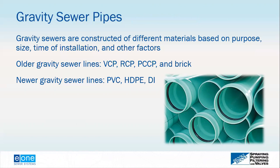Gravity sewer pipes and low pressure sewer pipes are constructed of similar materials, primarily based on the era of installation. Older gravity sewer systems may use vitrified clay pipe, reinforced concrete, pre-stressed concrete, or brick pipe. Some very old large sewers in northern territories were even built from tree trunks. Modern gravity sewer systems are typically constructed of polyvinyl chloride (PVC), high-density polyethylene (HDPE), or ductile or cast iron — and PVC and HDPE are also commonly used in low pressure sewer systems.